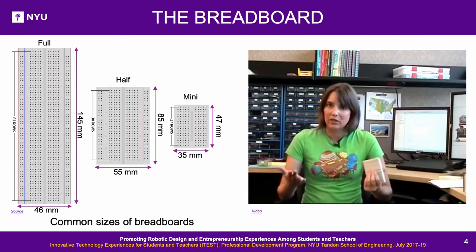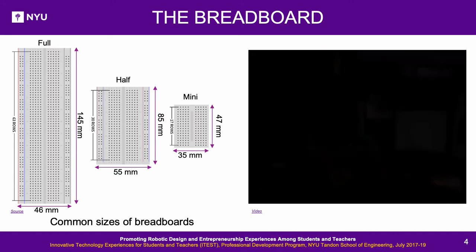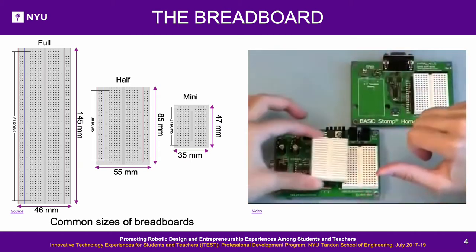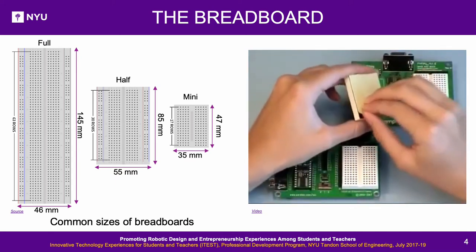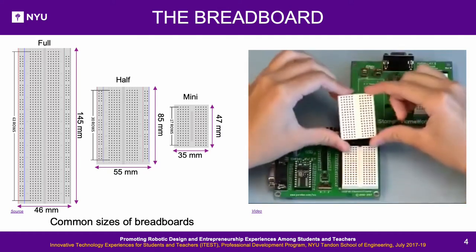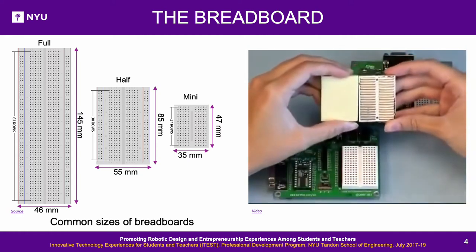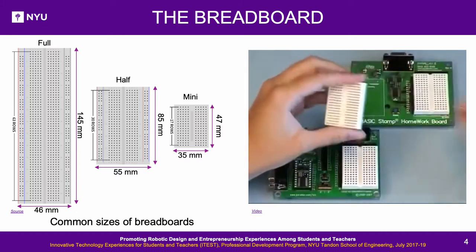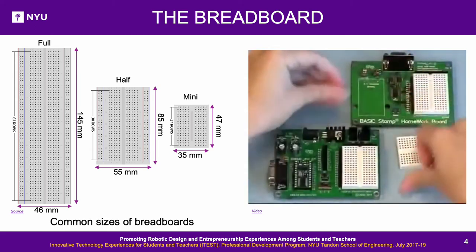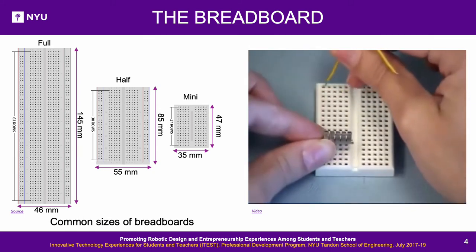Breadboards also come in a variety of shapes and sizes, and the type you use will depend on your preferences. Here we have the breadboard used on both the homework board and the board of education. Normally there's an adhesive backing, which can be used for mounting the breadboard onto a platform and also protects the back from touching undesired conductive material. If you remove the adhesive backing, you'll see a bunch of metal rows, which are really metal clips.